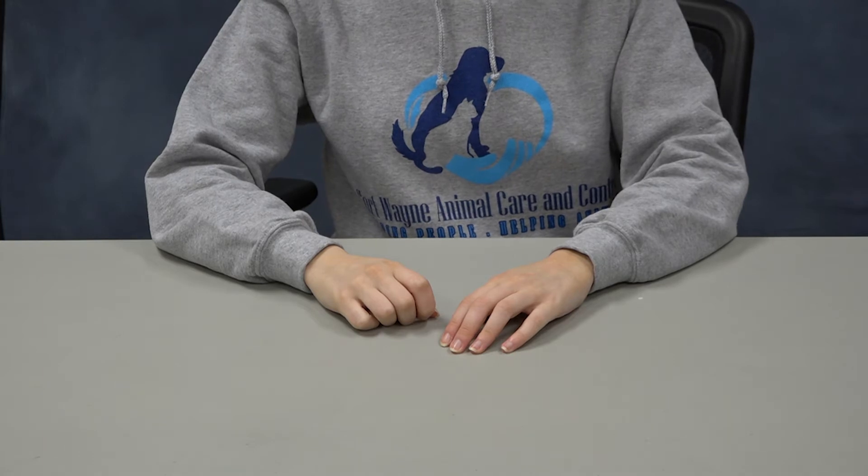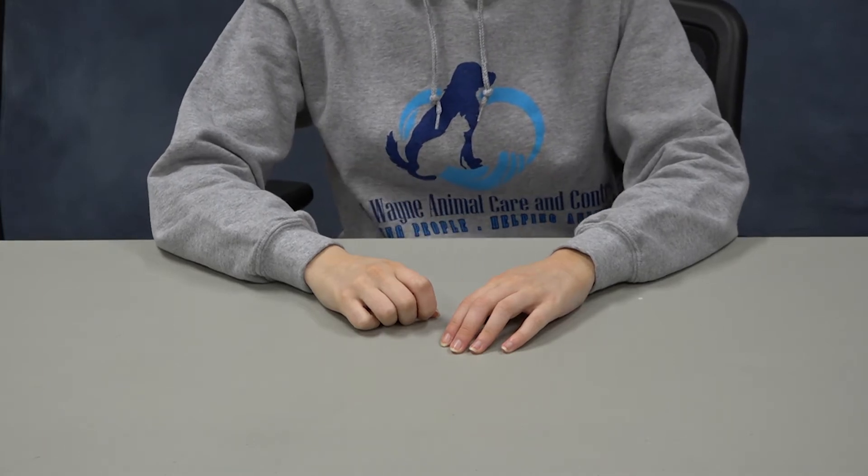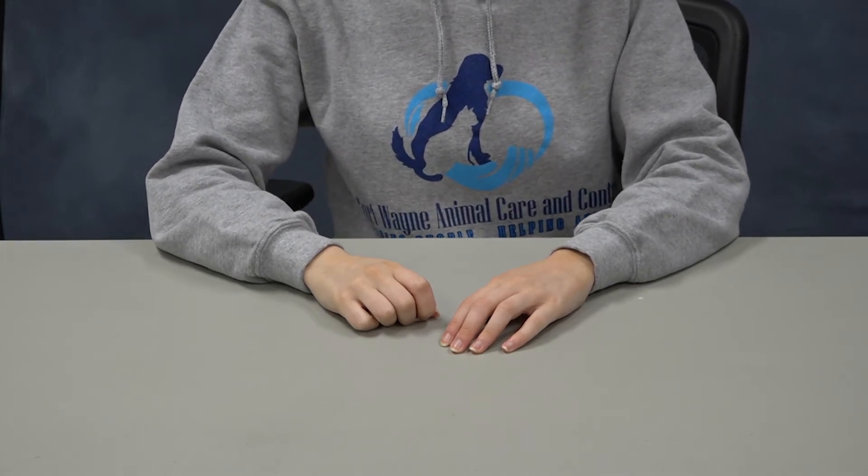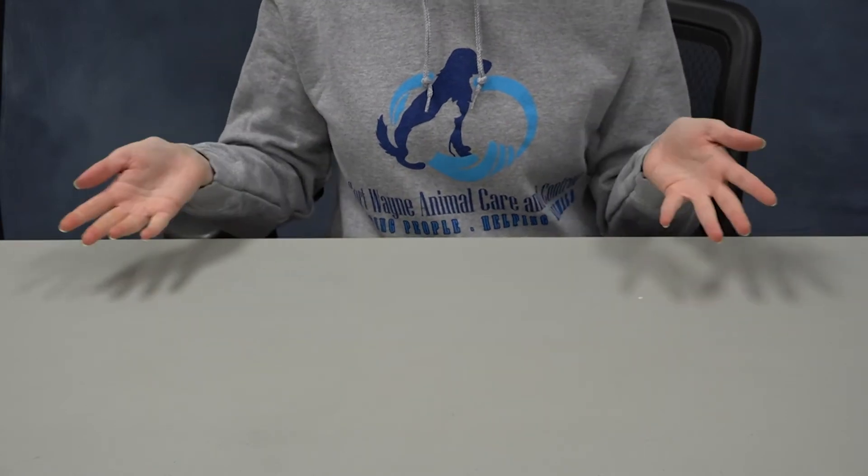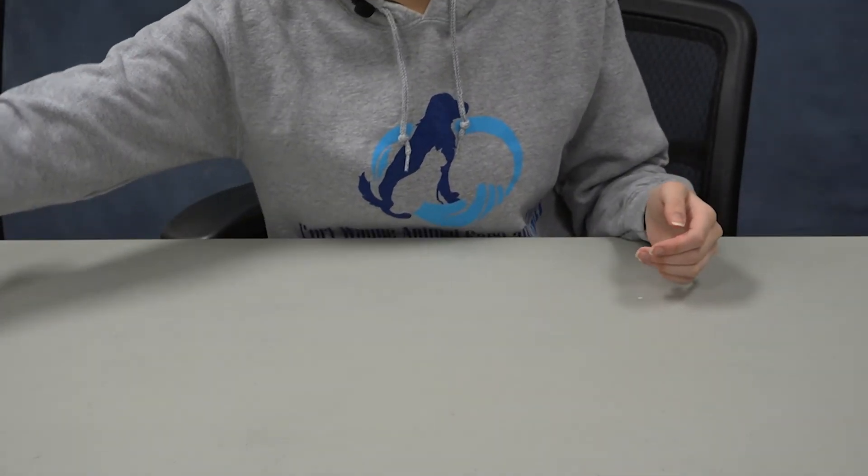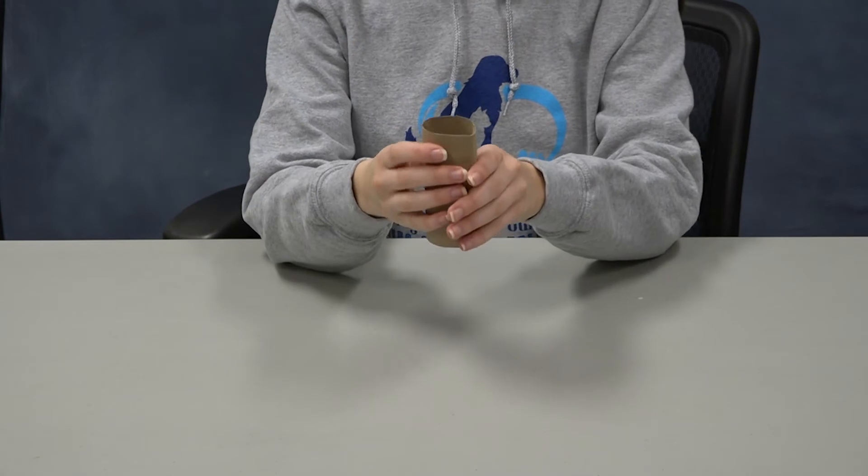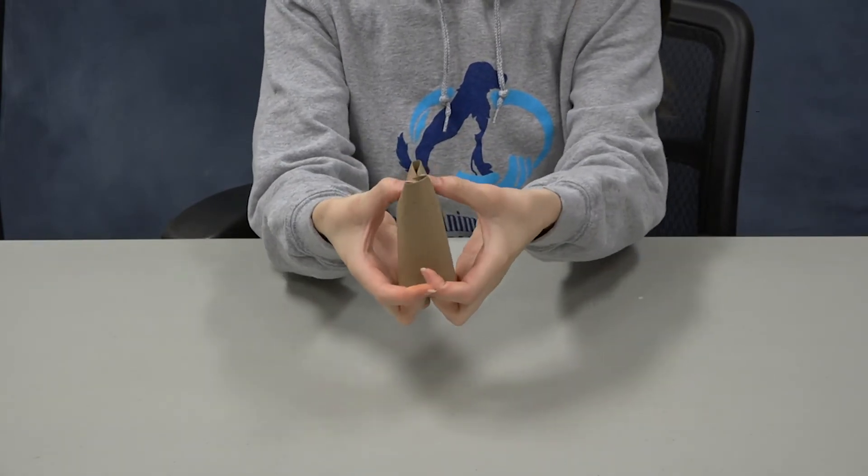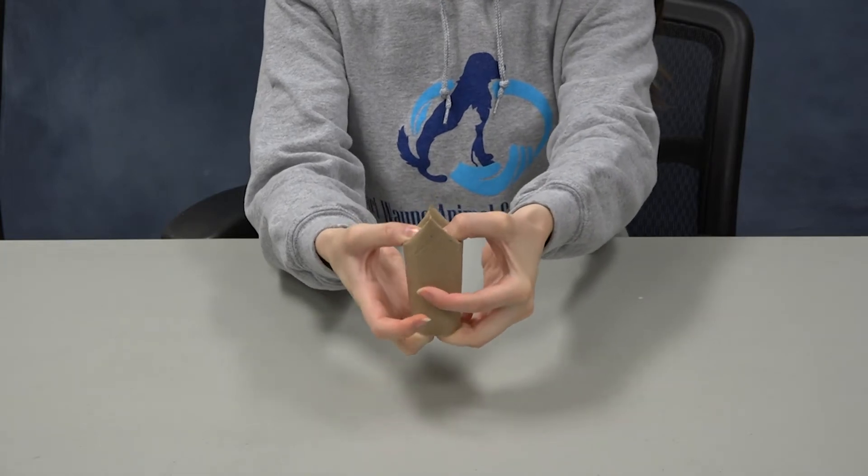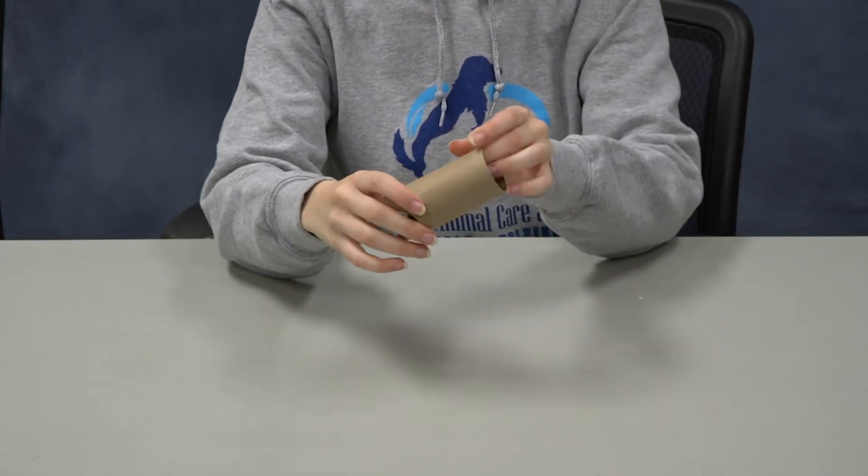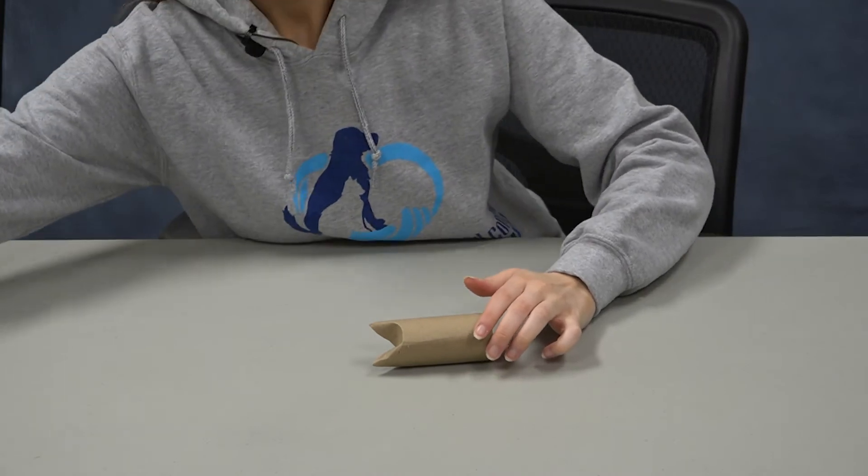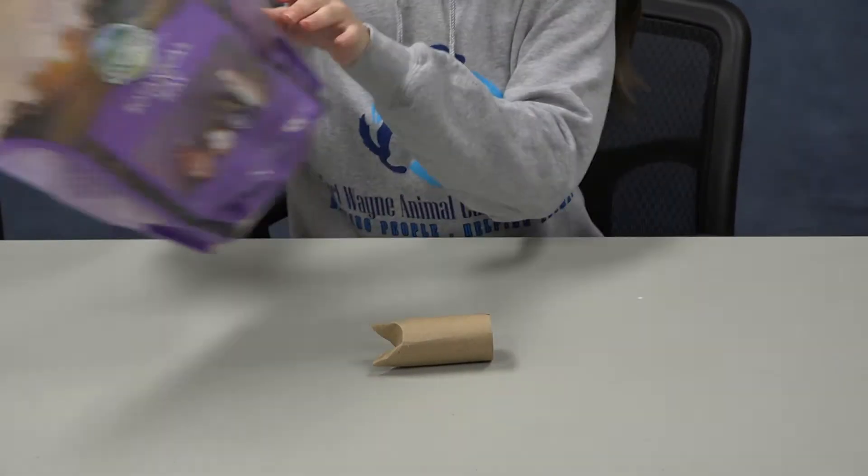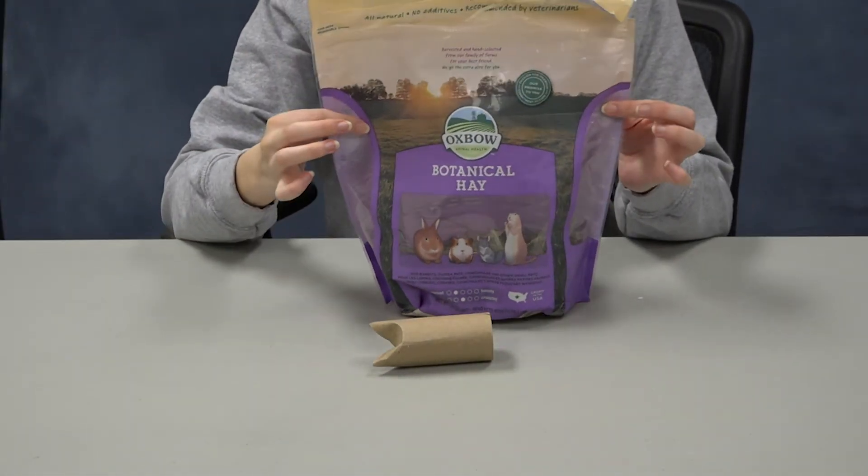Now, of course, we don't want to leave out your small animals because you might have rabbits or guinea pigs or hamsters at home. So we can do the same thing for your small animals. So again, we're going to take your toilet paper roll and press it down the center. And this time you're going to be using some of your small animals' hay, their favorite hay that they eat.